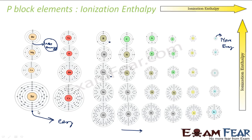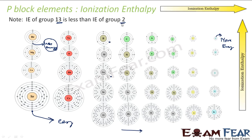One thing to note here is that Group 13 ionization energy is actually less than Group 2. Why?